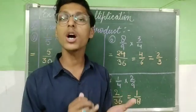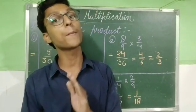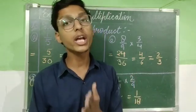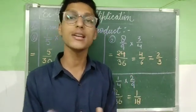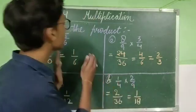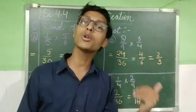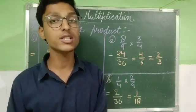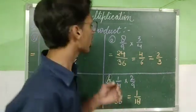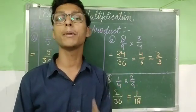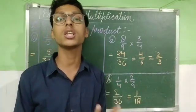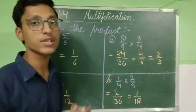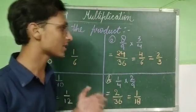Divisible hona, table mein aana — ye saari cheezein aapko yaad rakhni padhengi jo humne Chapter 3 mein seekhi thi, kyunki ek cheez doosri cheez se link hoti hai. Aapko divisibility rules yaad rakhne padenge aur kaise pata karein ki dono ek hi table mein aate hain ya nahi. These are all things we have already learned in Chapter 3. So now we are going to start question number 3.